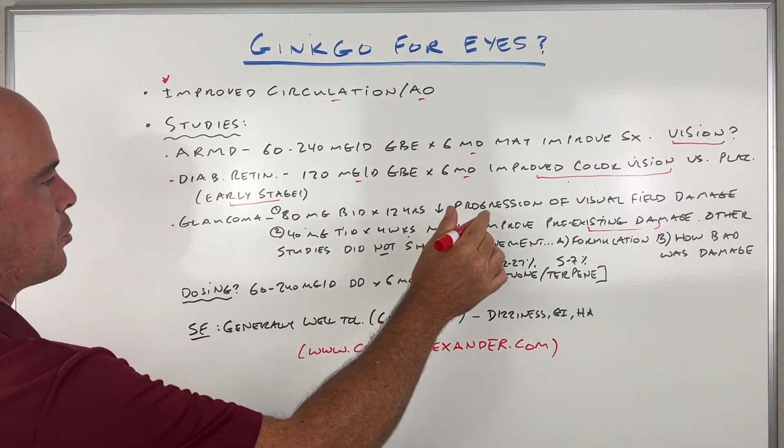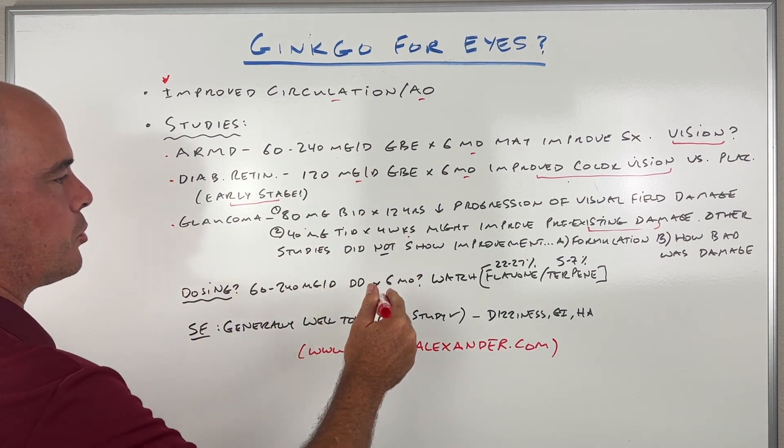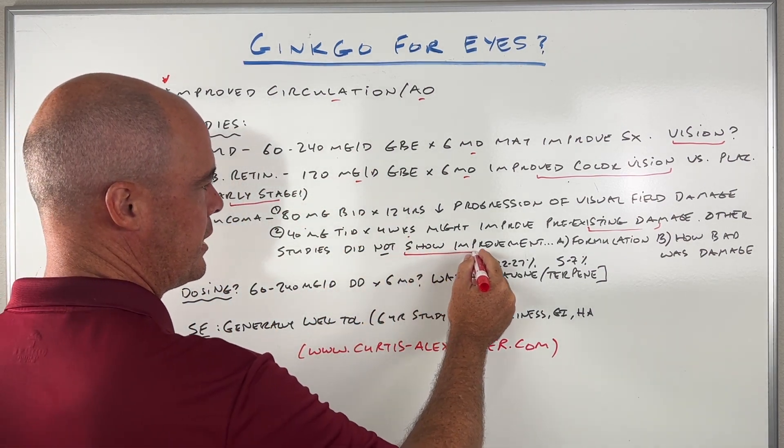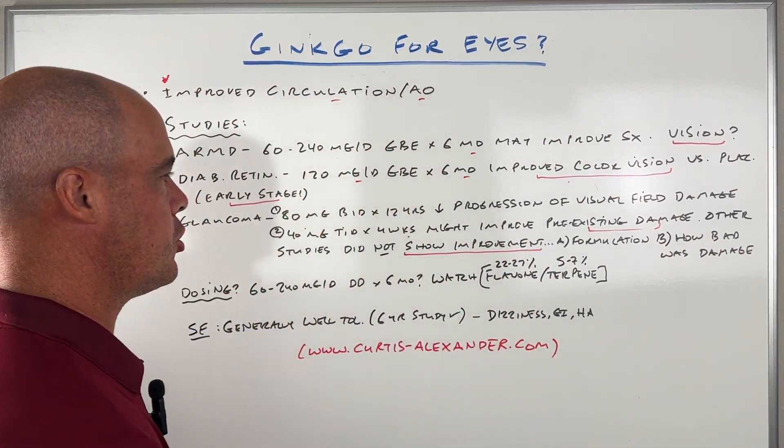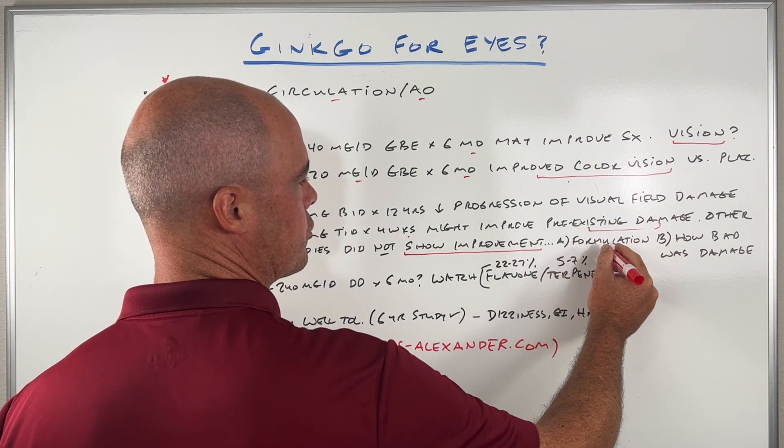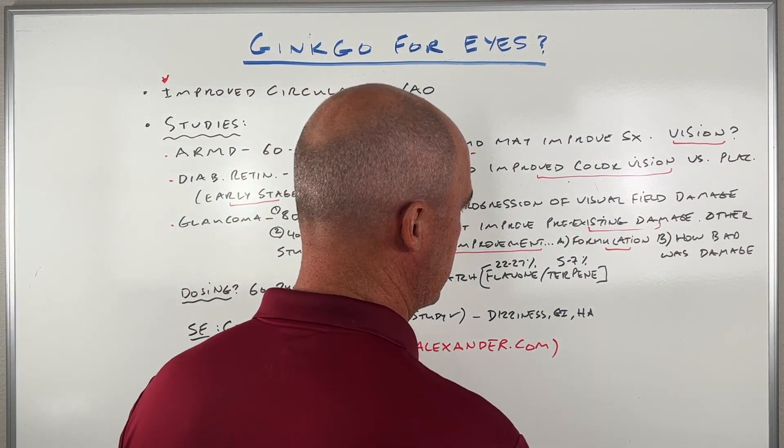However, I want to point out there were other studies that looked at treating glaucoma with ginkgo that did not show any improvements. Now why? The question becomes, why is that? Why did those studies not show? There was some concerns over, well, it's the type of formulation they're using. We'll talk about that in a second.